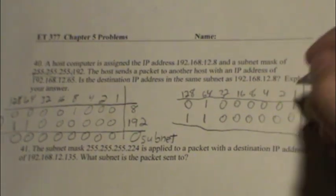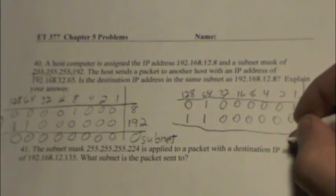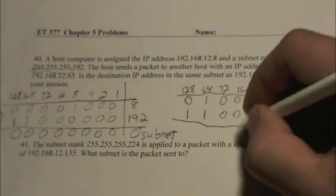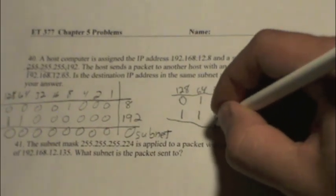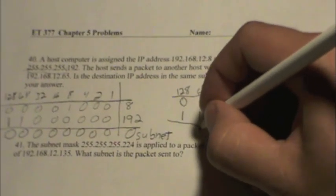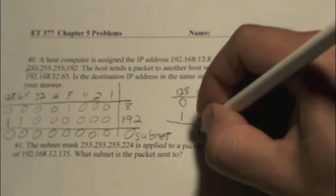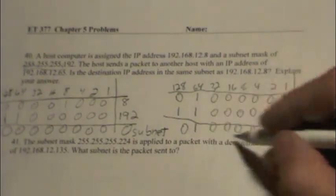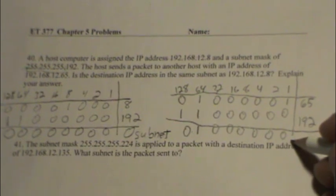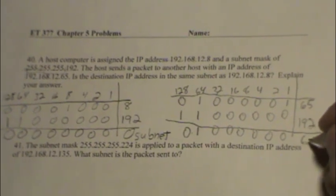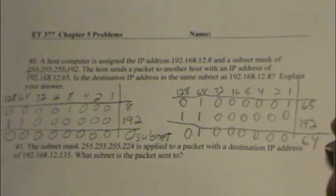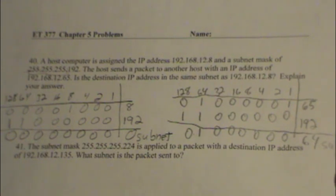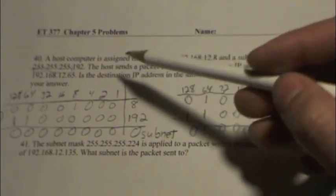Applying the AND function to 65 and the mask 192: we have a 1 in the 64-bit position of 65 and a 1 in the 64-bit position of the mask — that's a true statement — giving us a 1 there. The remaining bits all AND to 0, so the result is 01000000, which equals 64. This address is part of the 64 subnet.